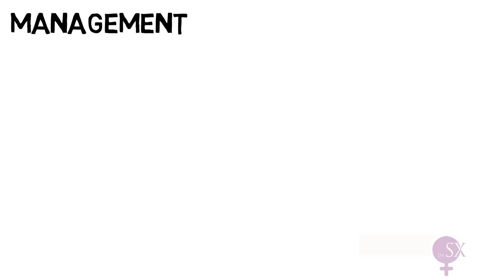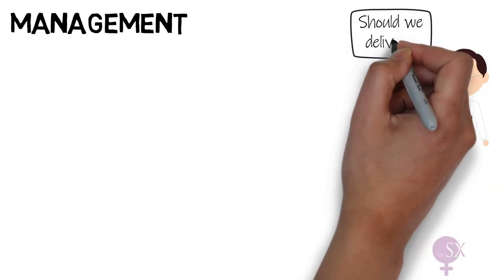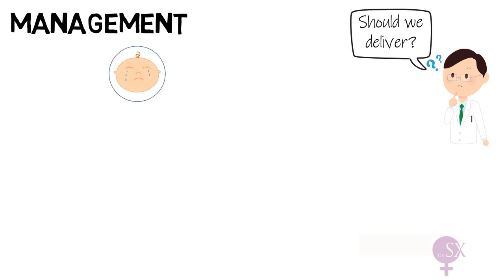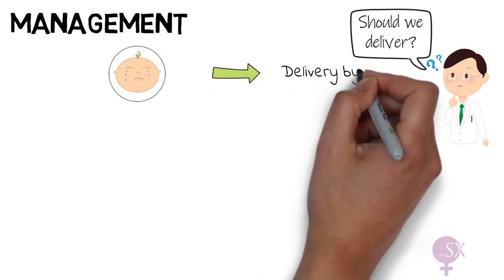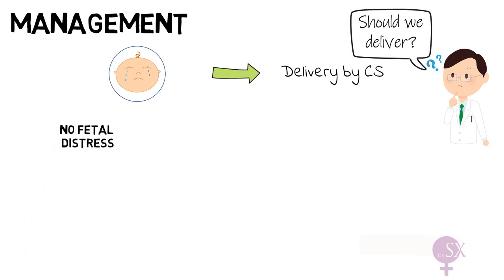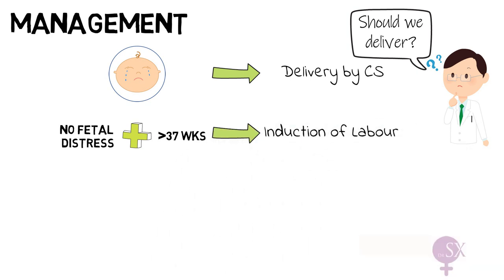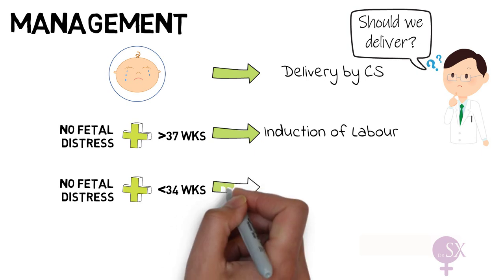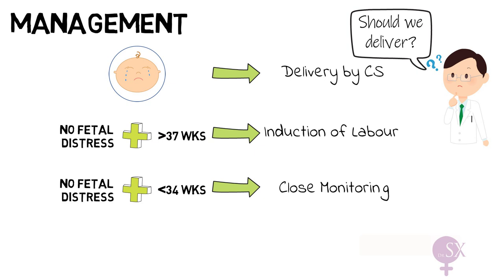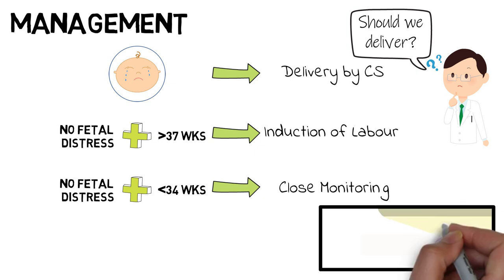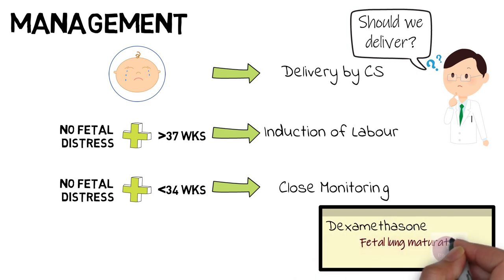Management essentially depends on the assessment of fetal and maternal condition. There is nothing we can do to remove the abruption; we must assess severity to decide whether to deliver. If there are signs of fetal distress or maternal deterioration, an urgent caesarean section is necessary. If there is no fetal distress and gestation is at term (37 weeks or more), induction of labour is performed for vaginal delivery. If there is no fetal distress but the pregnancy is preterm (less than 34 weeks), the patient can be monitored on the ward with dexamethasone given in case delivery becomes necessary. Dexamethasone improves fetal lung maturity and is given as two doses of 12mg, 12 hours apart, intramuscularly.